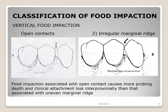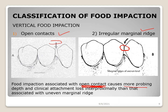Regarding the classification of food impaction: there are two types of vertical food impaction based on the reason — open contacts and irregular marginal ridges. When there is an open contact, food is directly entrapped between two teeth. When there are irregular marginal ridges with improper occlusal embrasure and improper contact due to differing marginal ridge positions, it leads to vertical food impaction. Food impaction associated with open contacts causes more probing depth and clinical attachment loss interproximally than that associated with uneven marginal ridges, making open contact the more dangerous cause of periodontal disease.